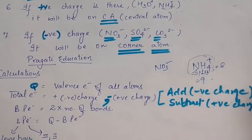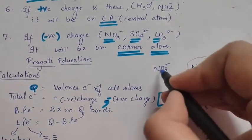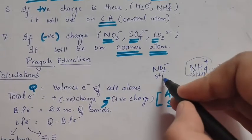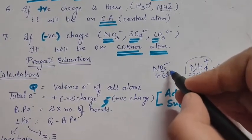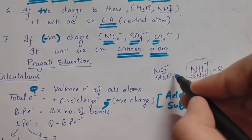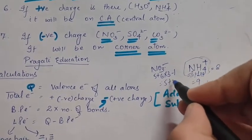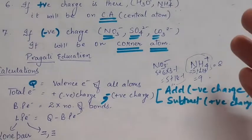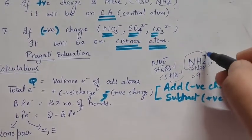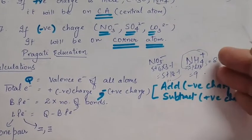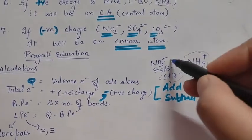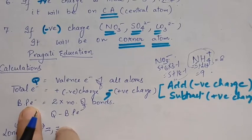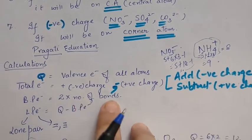If there is a negative charge on a molecule, like nitrate ion (NO₃⁻), you add electrons. For nitrogen, the valence electron is five. For oxygen, atomic number is eight, electronic configuration is 2,6, so six valence electrons; with three oxygen atoms that is 6 × 3 = 18. Since there is a negative charge, you add one electron: 5 + 18 + 1 = 24 total valence electrons. So the rule is: subtract for positive charge, add for negative charge.